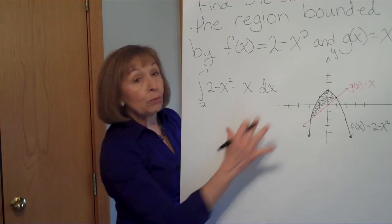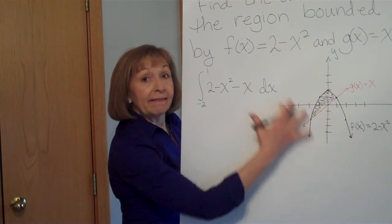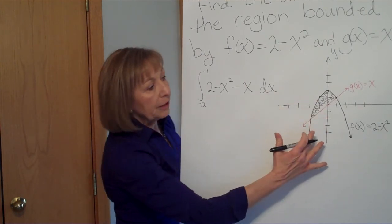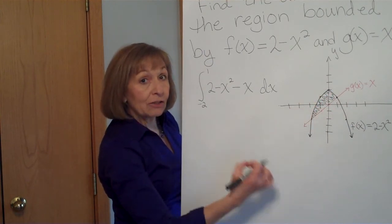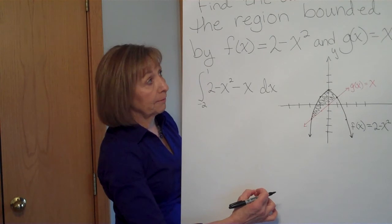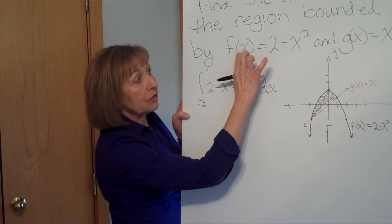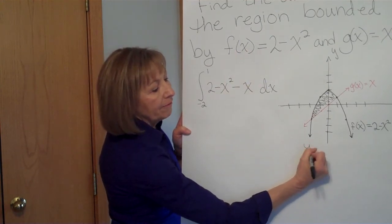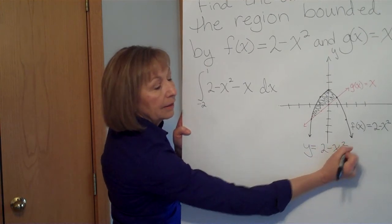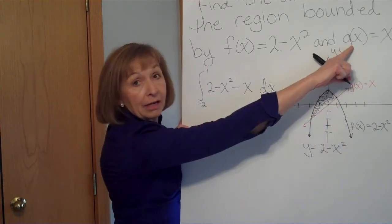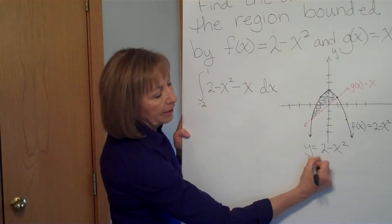Now, if you weren't able to get that from your picture, you would want to find the points of intersection, and specifically the x coordinates of the point of intersection. Since f of x is just another name for y, that function is y equal 2 minus x squared. And g of x is just another name for y for that function, y equal x.